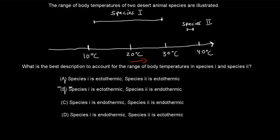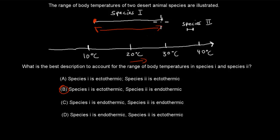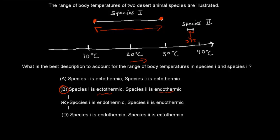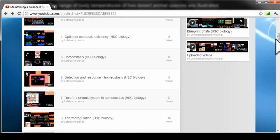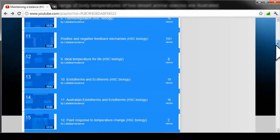The correct answer is B. Species one has a big range — if it's 10°C outside, its internal temperature is 10°C; if it's 30°C outside, its temperature is 30°C. It can't control its own temperature — that's ectothermic. Species two is endothermic, meaning it can keep its temperature at a narrow limit of around 37°C, varying only slightly on either side. All other options are incorrect. This comes from videos 10 and 11: Endotherms and Ectotherms.